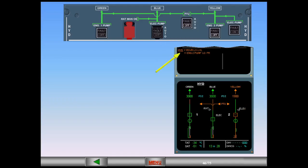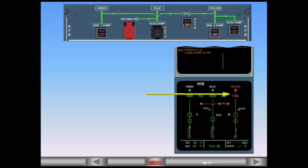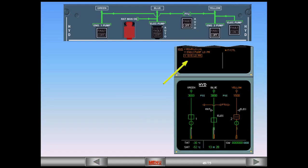The ECAM caution yellow engine 2 pump low pressure appears amber on the engine warning display to indicate that the yellow engine 2 pump is not producing pressure because you switched it off. The yellow system pressure continues to drop. The corresponding ECAM caution yellow system low pressure is displayed on the engine warning display to indicate that the yellow system is no longer pressurized. On the ECAM hydraulic page, the yellow system pressure changes from green to amber. In addition, the yellow system indication changes from white to amber, indicating the loss of yellow system pressure to the users.